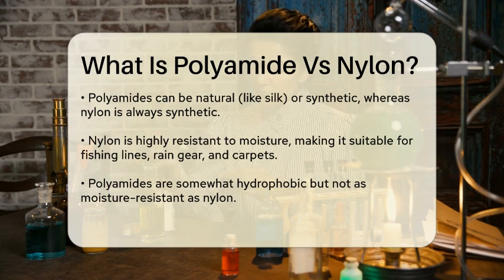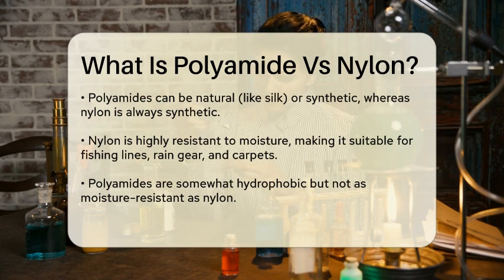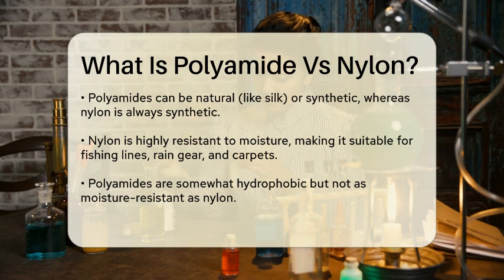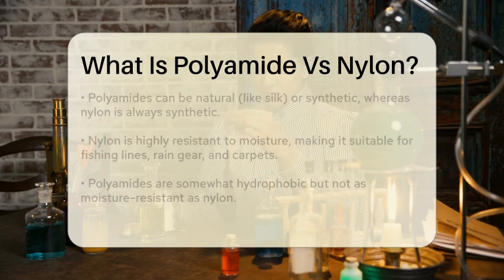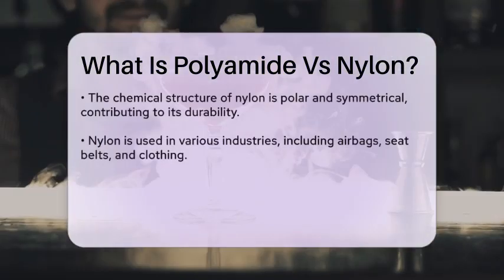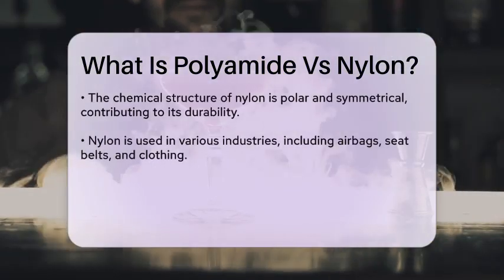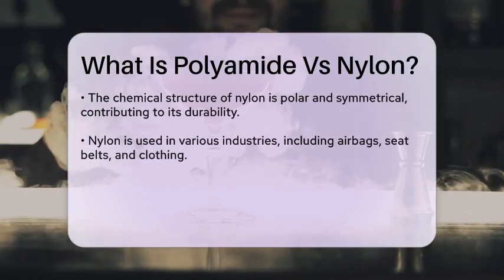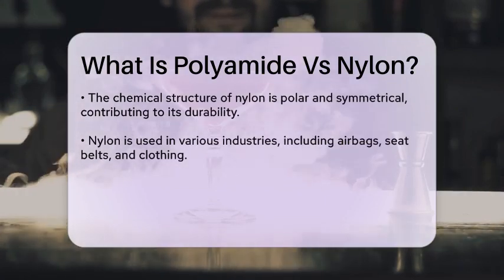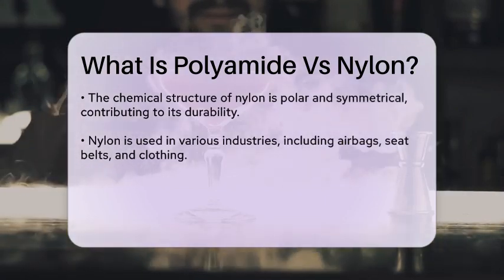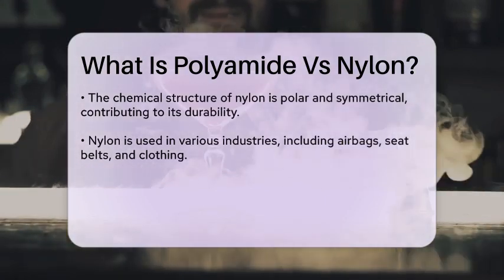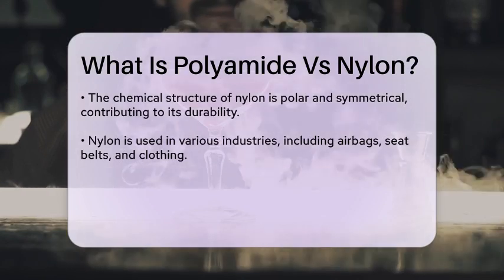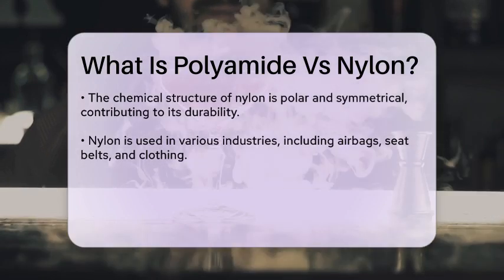The chemical structure of nylon is highly polar and symmetrical, which means its molecules have a balanced arrangement of positive and negative charges. This structure contributes to nylon's durability and resistance to deformation. Polyamides, however, can have varying molecular structures depending on the specific type.